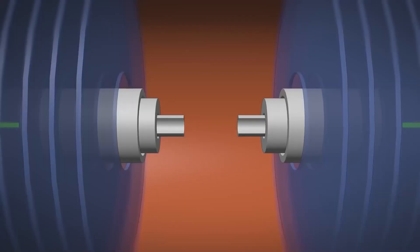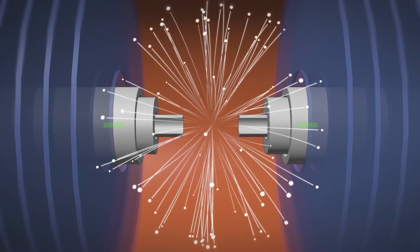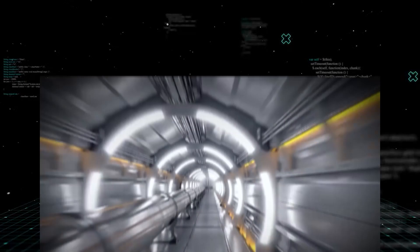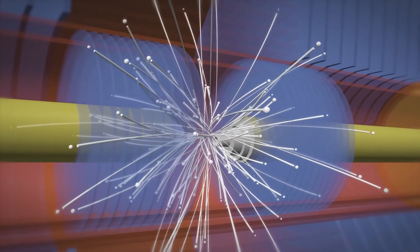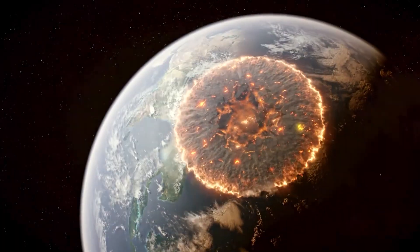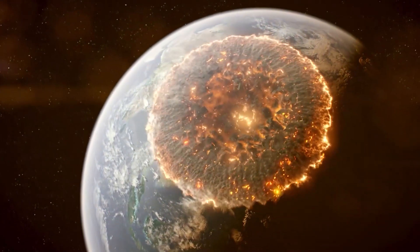Humanity was nearly erased, not by war or plague, but by a single particle forged in the heart of CERN. In an experiment that pushed past all safety limits, scientists accidentally created a strangelet, a hypothetical doomsday particle capable of converting our entire planet into a lifeless sludge.